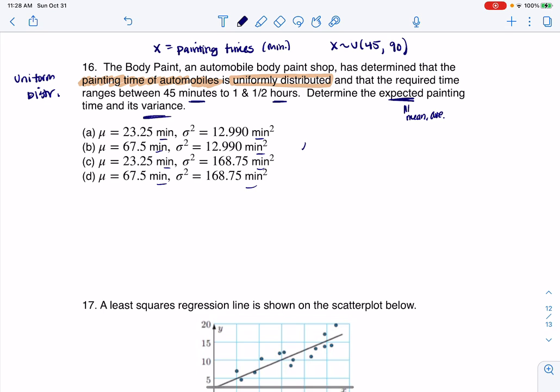So if I want my mean, we know from the uniform distribution, it's A plus B over 2. So we have 45 plus 90 over 2. And when I crunch that number, I'm going to get 67.5 and the units are minutes. So at that point, I rule that out and that out. So now we're down between B and D.